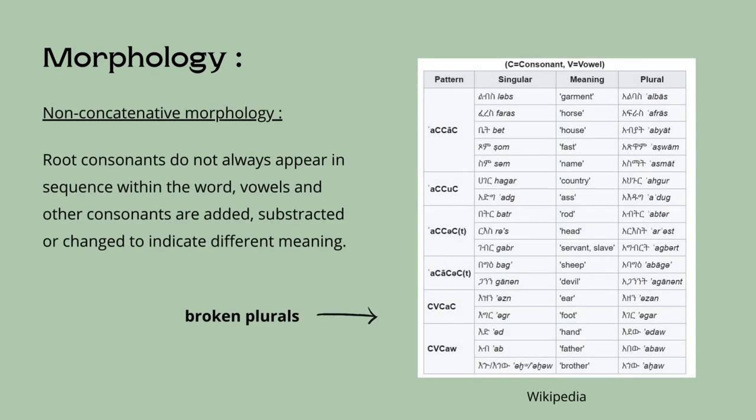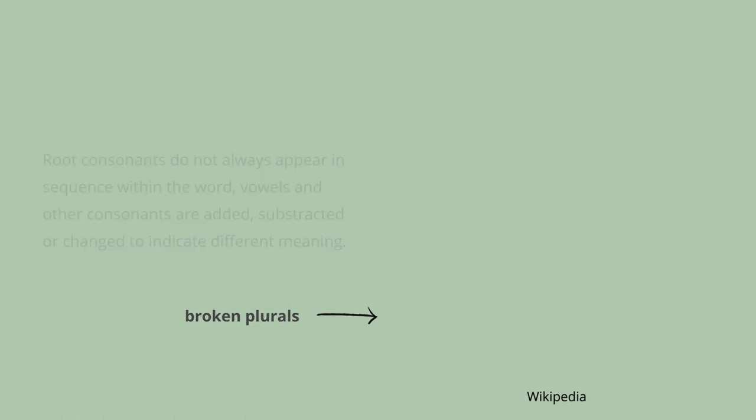Non-concatenative morphology is also an important aspect of Semitic languages. It's when the root consonants do not always appear in sequence within the word; instead, vowels and other consonants are added, subtracted, or changed to indicate different meaning. An example of this are broken plurals, formed by changing the pattern of consonants and vowels inside the singular form, as you can see on the slides. Since there is a lot to say about morphology, I won't mention anything else — if you want to further your understanding, I encourage you to have a look at Lambdin's introduction to Classical Ethiopian.